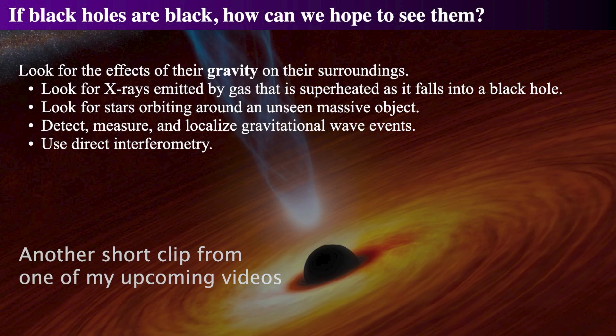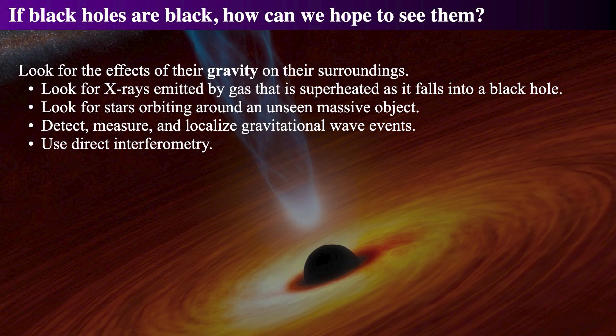As we saw earlier, a black hole with the mass of the Sun is only about two miles, or three kilometers in diameter. The Earth, Moon, and Sun are really big compared to that. Also, a black hole is something that doesn't, by definition, emit light. So how do we see something that is really, really small and doesn't emit or reflect any light? And to actually find and witness a black hole and its effects would be amazing. To that end, astronomers have to look for the effects on their surroundings.